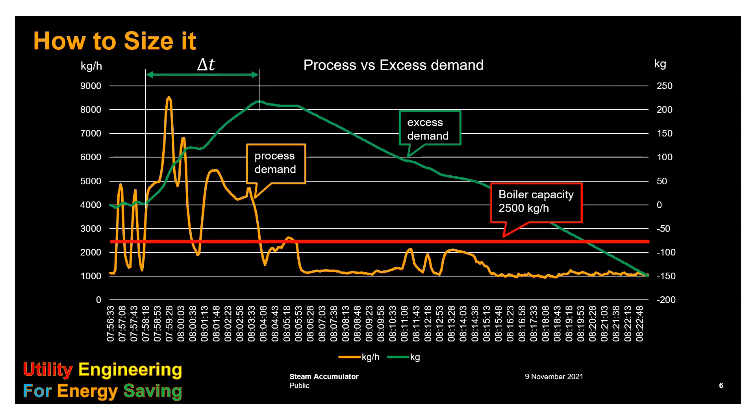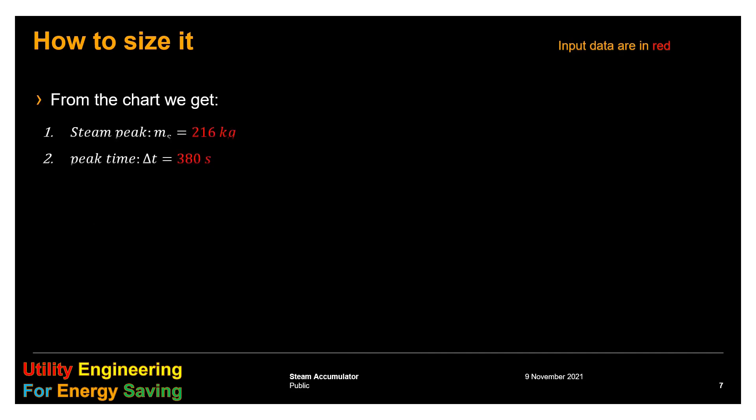Let's see an example. The orange chart is the record of steam consumption in kg per hour. The red line is the boiler capacity, also 2500 kg per hour. The green chart is the integral versus time of the orange minus the red, and its unit is kg, which we can read on the right axis. This curve represents the excess demand, the demand that cannot be supplied by the boiler. The steam accumulator has to be sized considering its peak and the delta time from the peak and the closer zero value backwards.